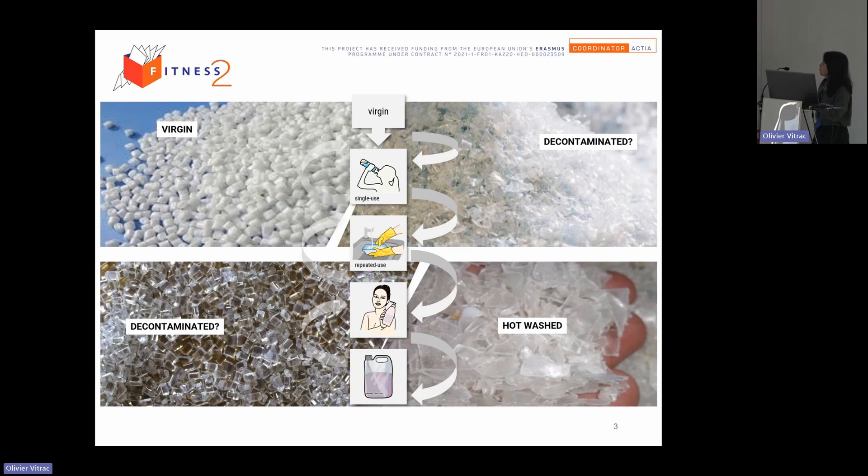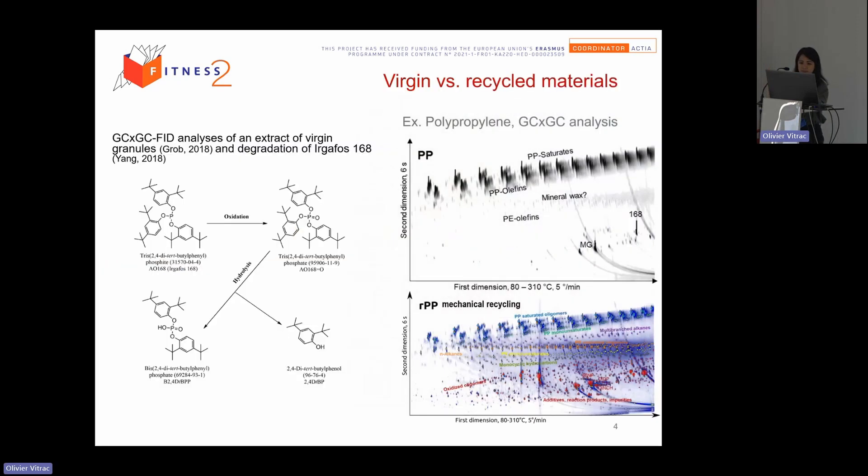So just to pose some problems. So we have many kinds of materials. The virgin one, decontaminated plus or more because we have the two different colors, just hot washed. So if we can or not recognize the virgin and so on. Olivia already showed us some this morning.